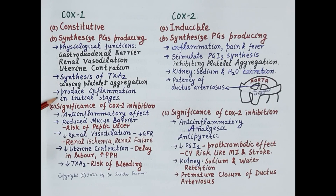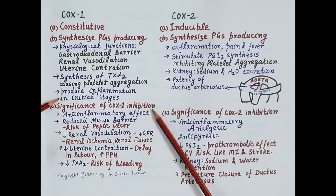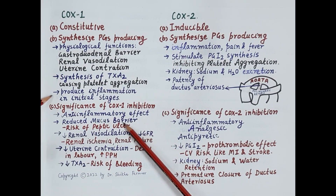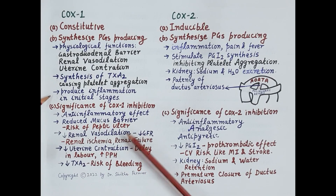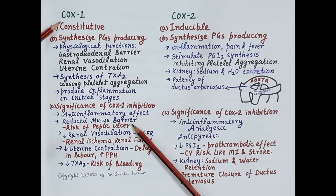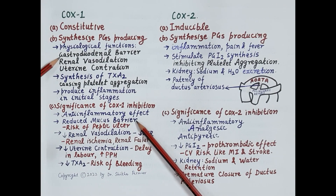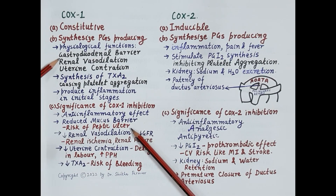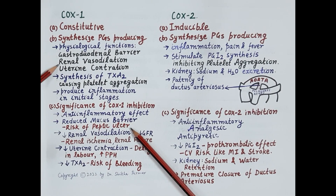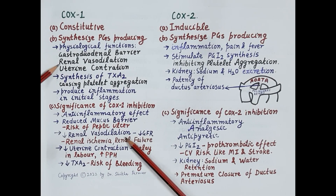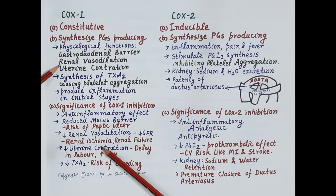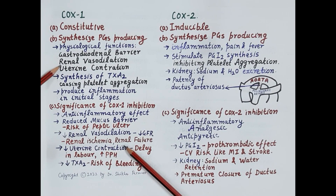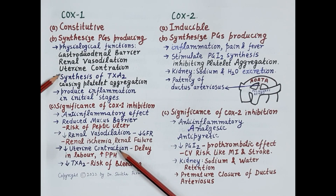Since prostaglandins produced by COX-1 are responsible for inflammation during initial stages, inhibition of COX-1 produces an anti-inflammatory effect. However, this is associated with a number of side effects. Inhibition of COX-1 reduces secretion of mucus, increasing the risk of peptic ulcer. Inhibition of COX-1 also reduces renal vasodilation, causing a fall in glomerular filtration rate, and reduced blood supply to the kidneys can cause renal ischemia and renal failure.